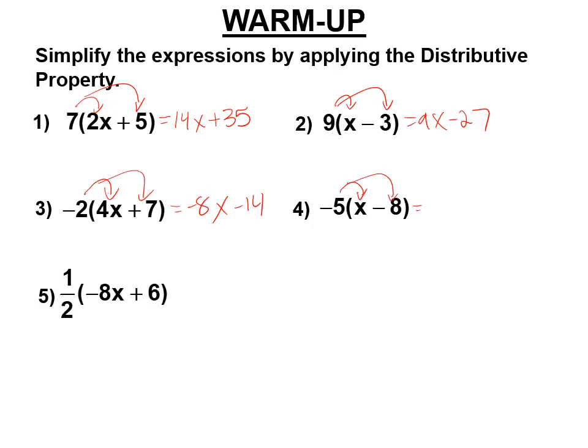Negative 5 times x is negative 5x, times negative 8, plus 40.